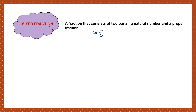What is a proper fraction? One where the numerator is smaller than the denominator. Can you see that there are two parts to this fraction? There is a natural number and there is a proper fraction. So, when you have both together, such a fraction is called a mixed fraction.